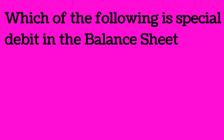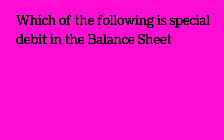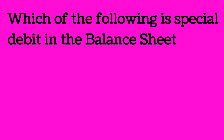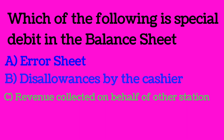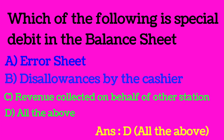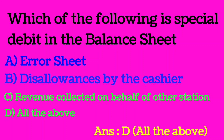Next question: which of the following is a special debit in the balance sheet? Option A is error sheet, Option B is disallowances by the cashier, Option C is revenue collected on behalf of other stations, and Option D is all of the above. The correct answer is Option D — all of the above. Error sheet, disallowances by the cashier, and revenue collected on behalf of other stations are all special debits in the balance sheet.